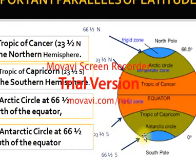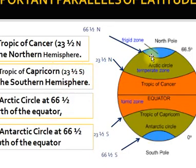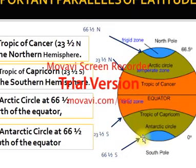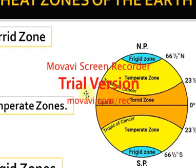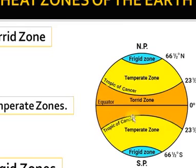The Arctic Circle is to the north at 66 and a half degrees north. The Antarctic Circle is at 66 and a half degrees south. These are the important parallels of latitude. The Tropic of Cancer and the Tropic of Capricorn define key zones.